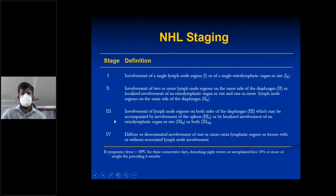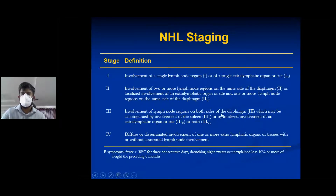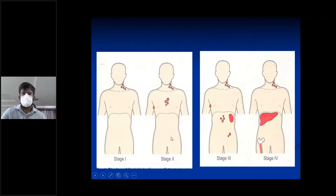Stage 3 involves lymph node regions on both sides of the diaphragm, which may be accompanied by spleen involvement or localized involvement of an extra-lymphatic organ. Stage 4 is diffuse or disseminated involvement of one or more extra-lymphatic organs with or without associated lymph node involvement — this is essentially metastasis through lymphatic channels. Stage 4 can disseminate even to the bone marrow.